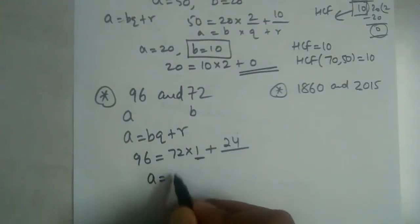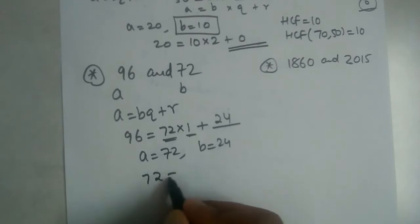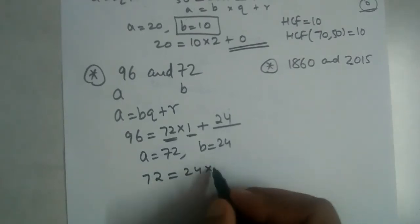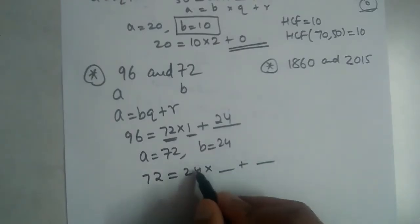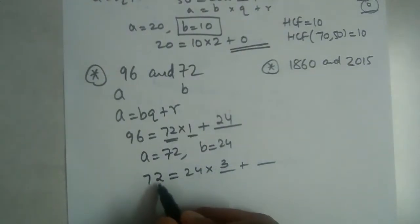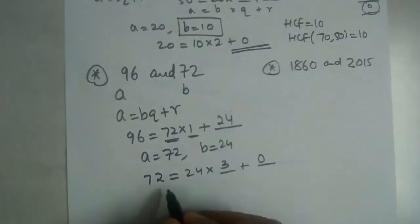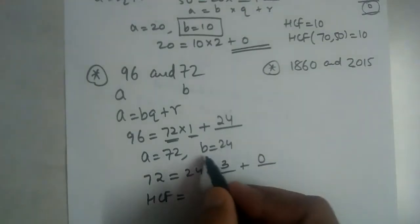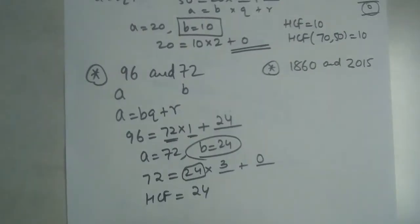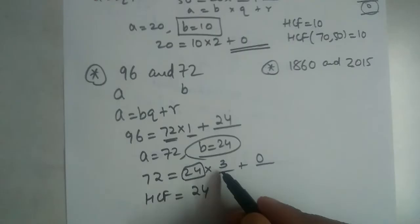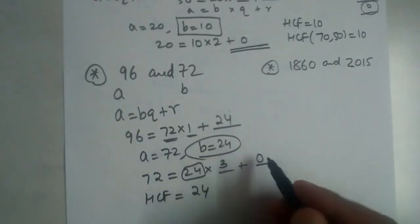In the next step, take a as 72 and b as 24. So 72 is equal to 24 into 3 plus 0. Twenty-four threes are 72, so the remainder is 0. The HCF is the value of b when remainder is 0, so HCF is 24. Note: some students correctly work all steps but mistakenly write the HCF as 3 or 72 — don't do that.